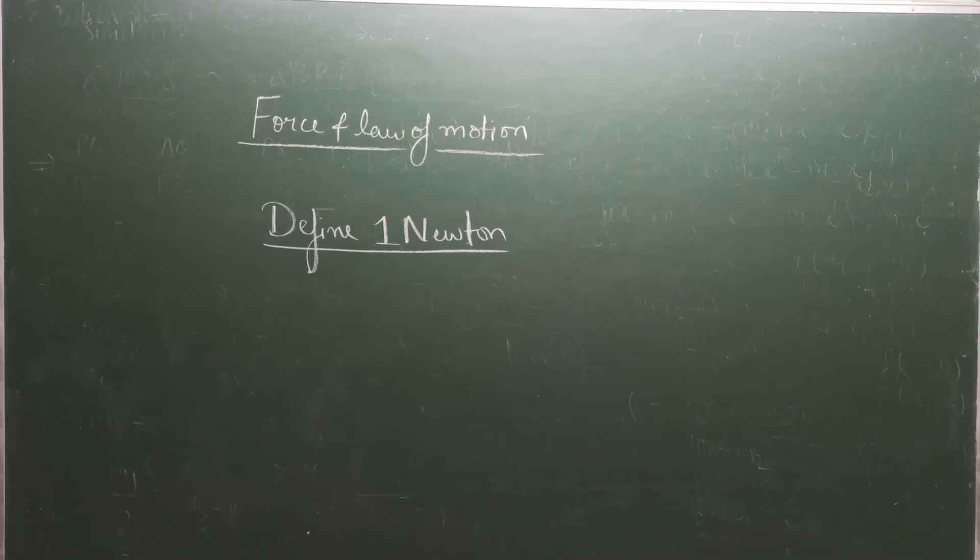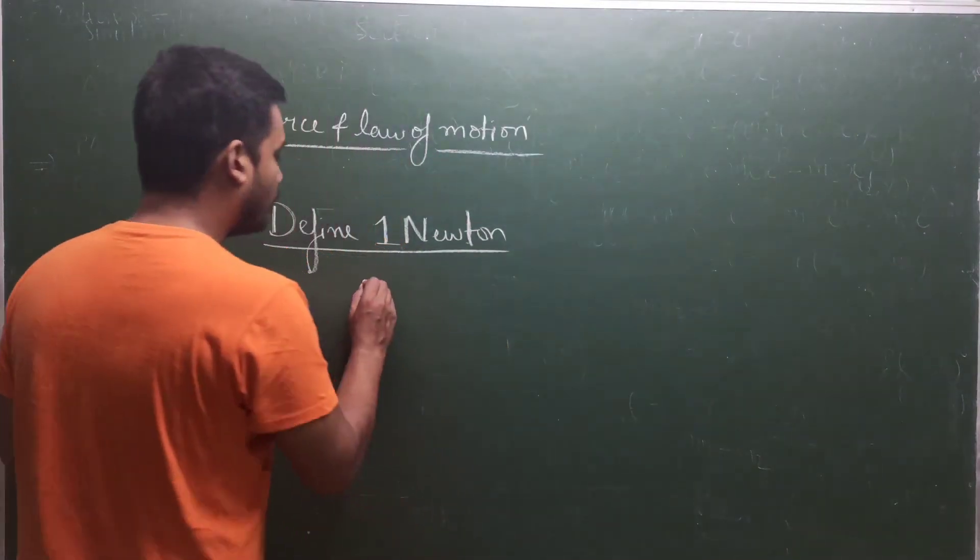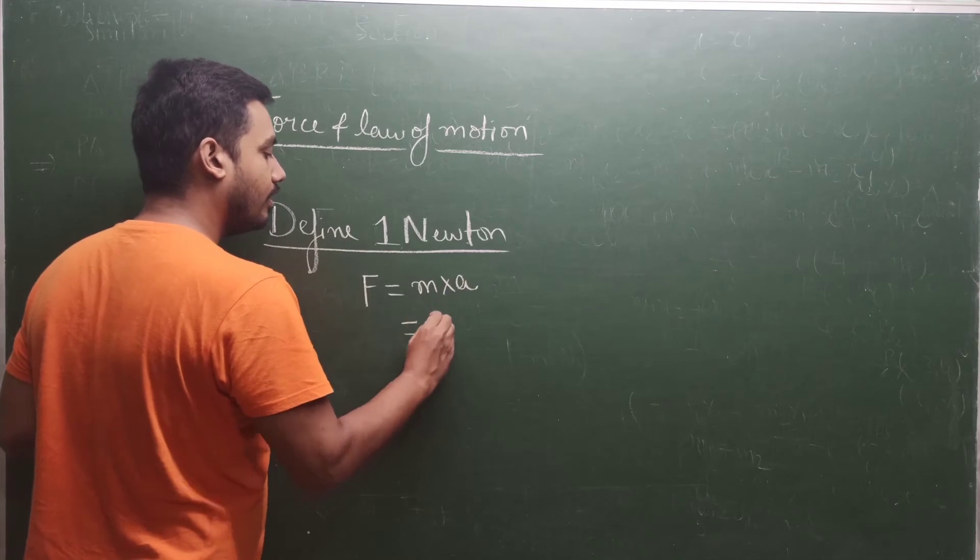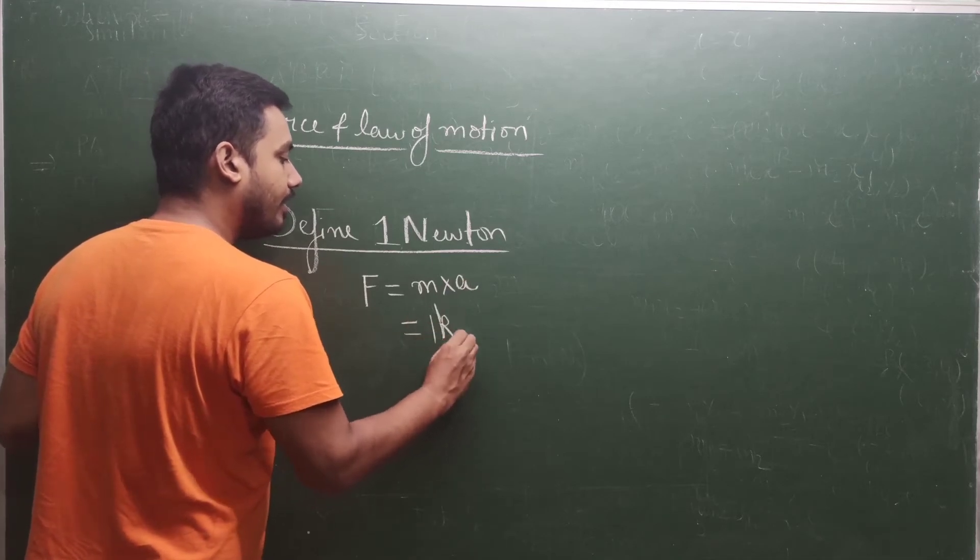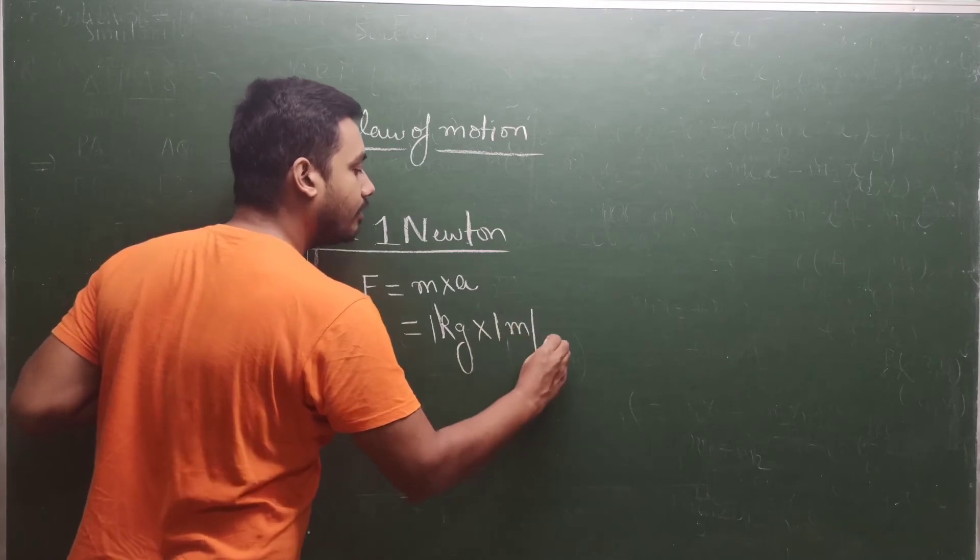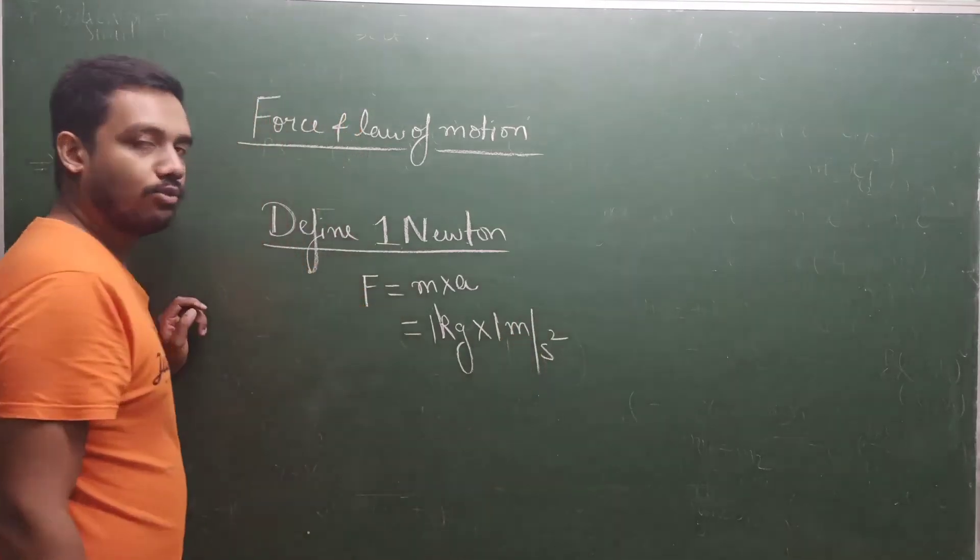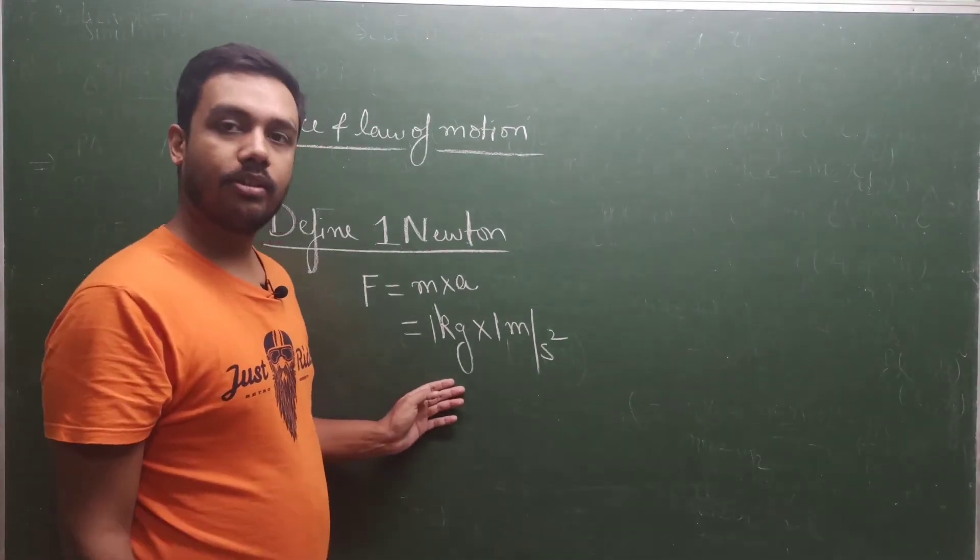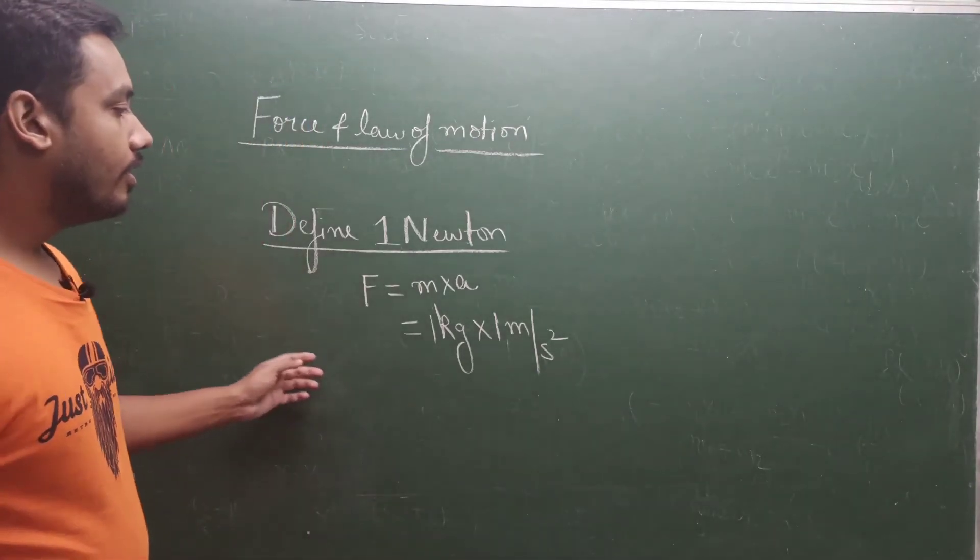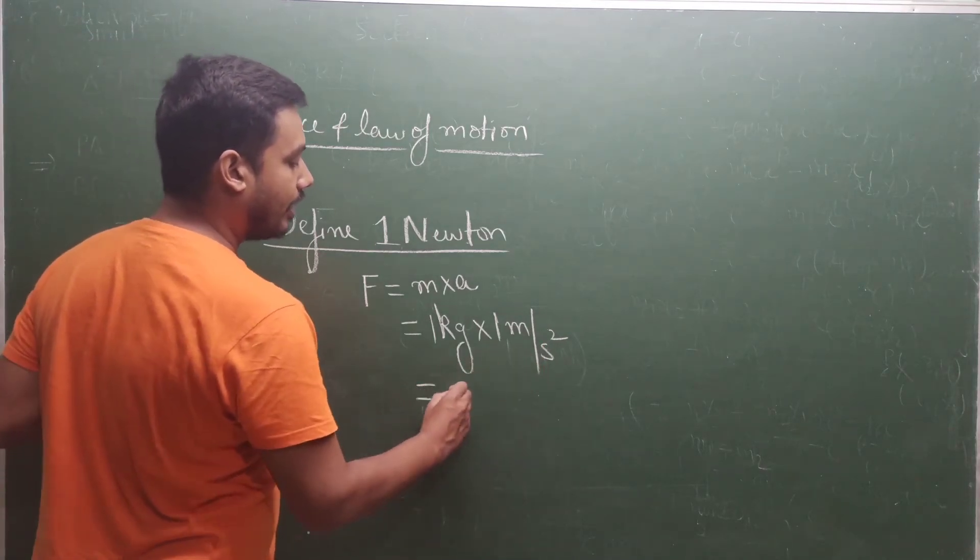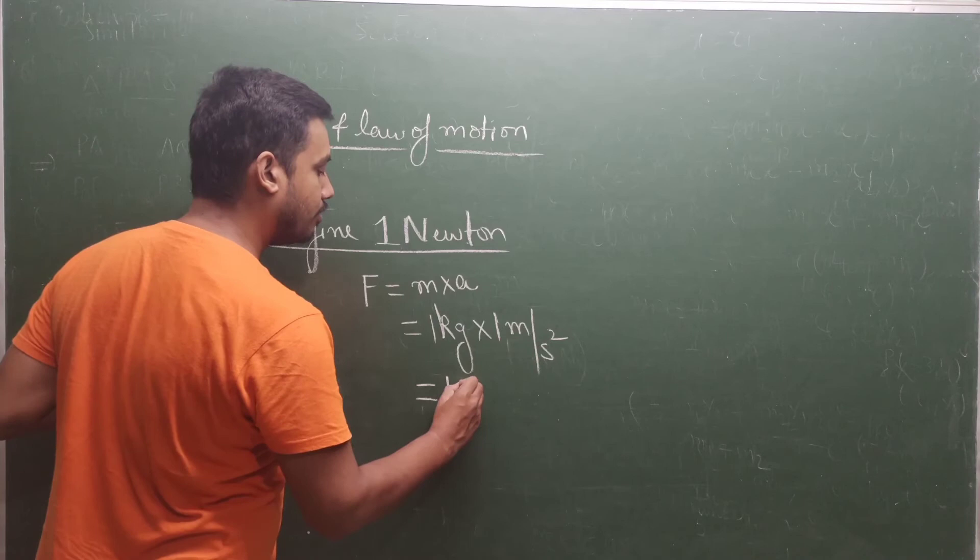Next topic is: define one Newton. Force formula is mass into acceleration. If mass is 1 kg and acceleration is 1 meter per second square, then the answer is 1 kg meter per second square, which is 1 Newton.